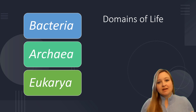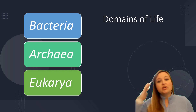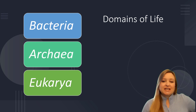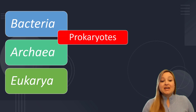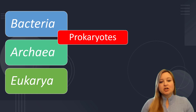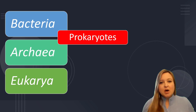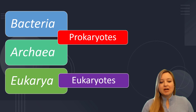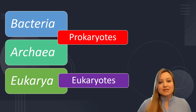Everything, all life on Earth, is included in one of these three domains — bacteria, archaea, or eukarya. Bacteria and archaea: organisms in those two domains are known as prokaryotes. And organisms that are in the eukarya domain are known as eukaryotes.